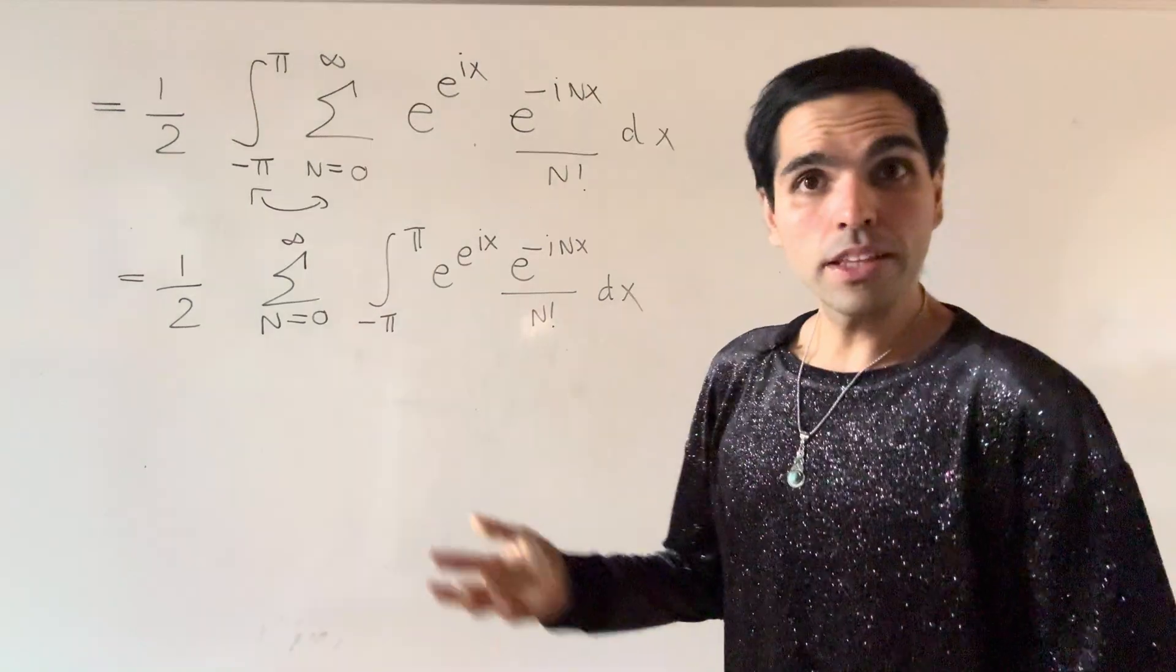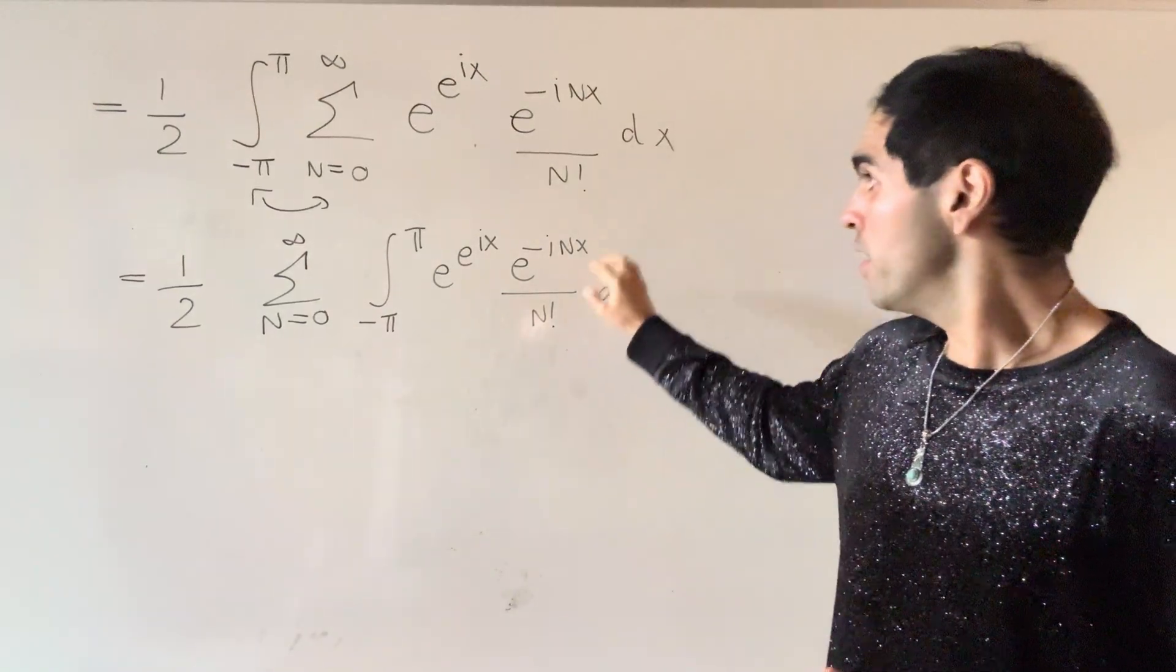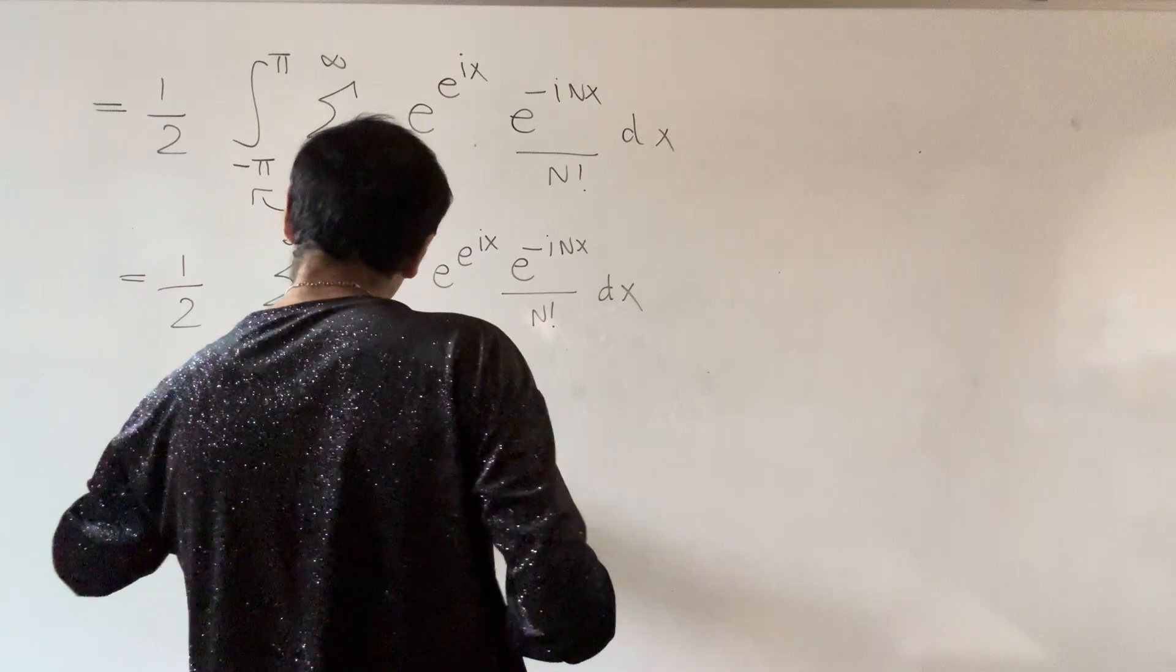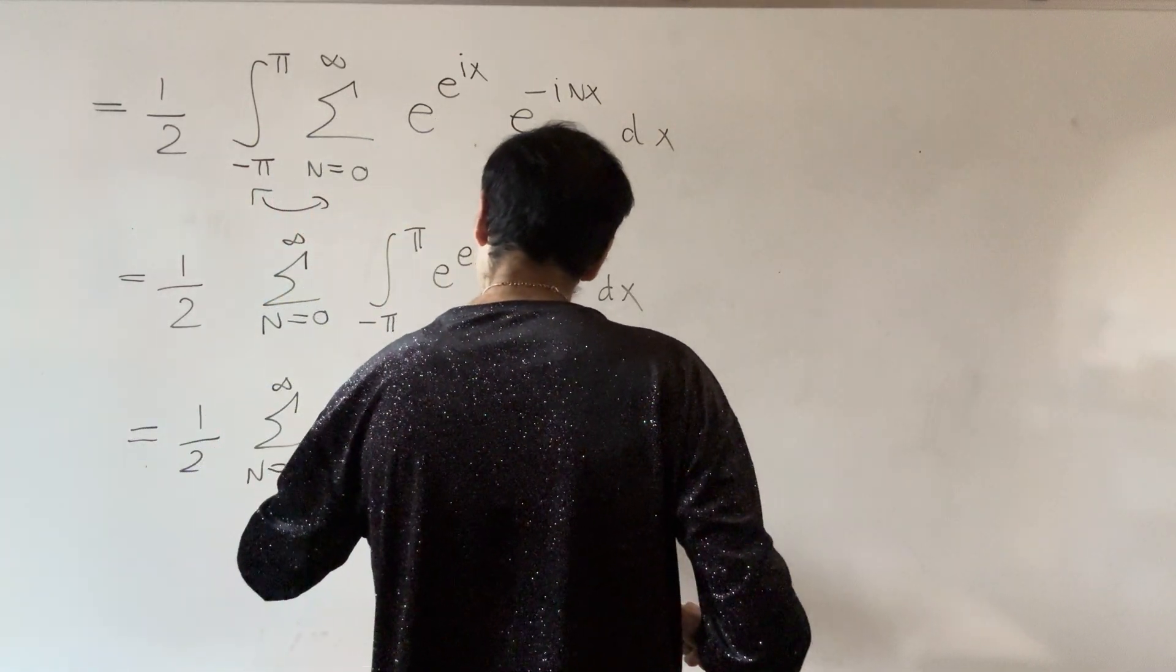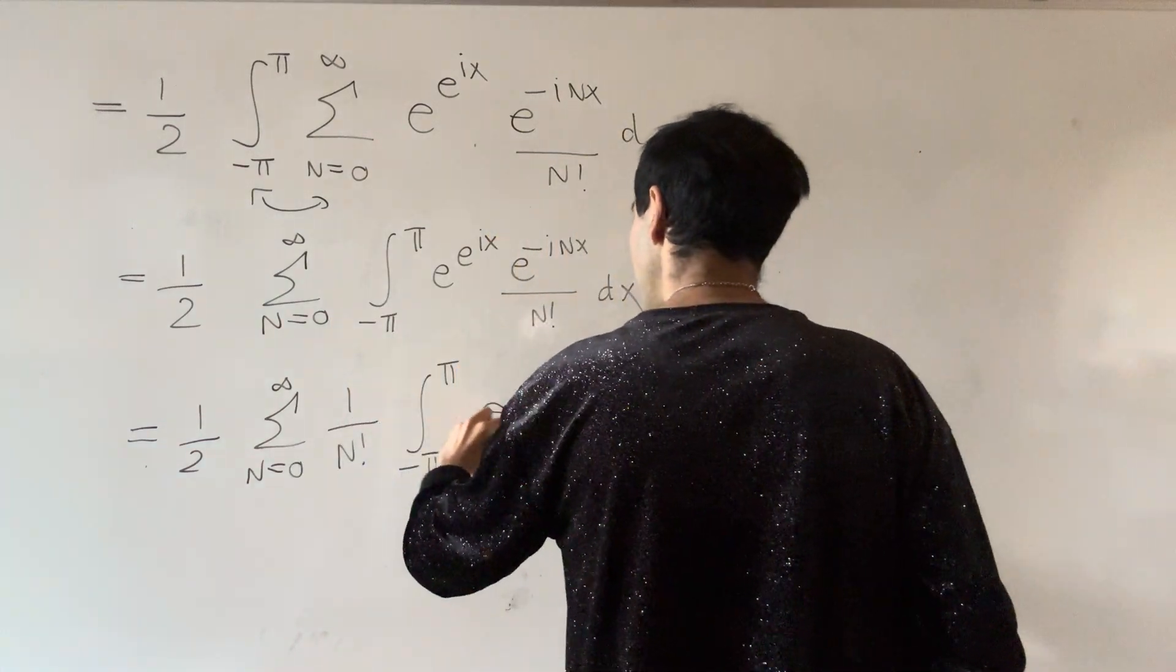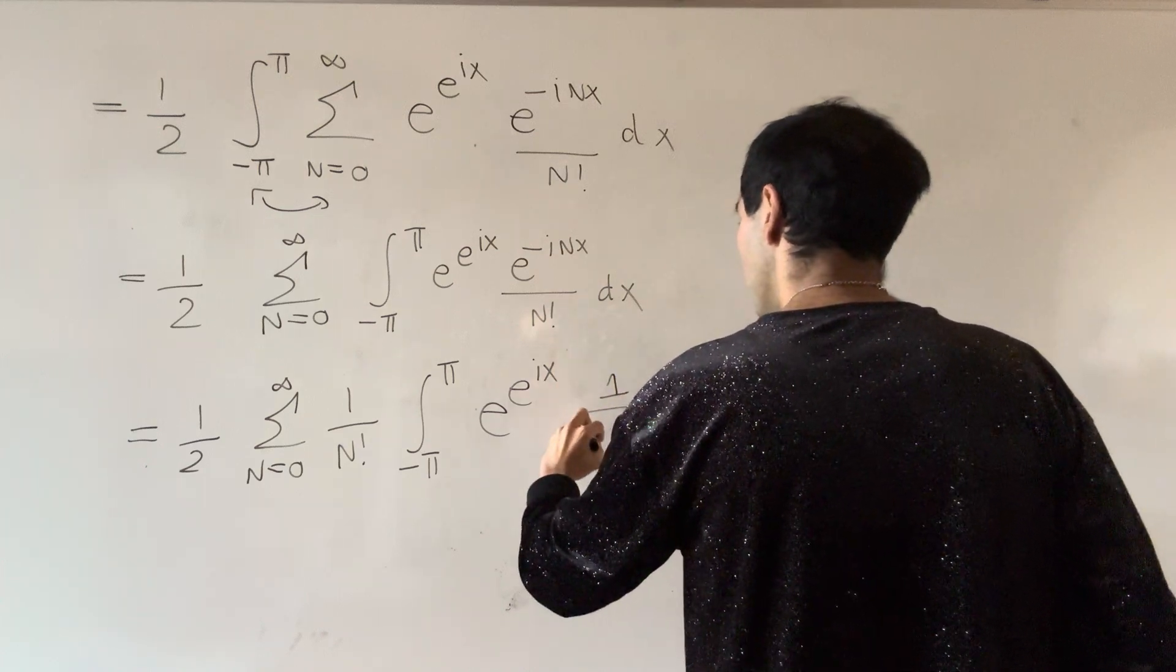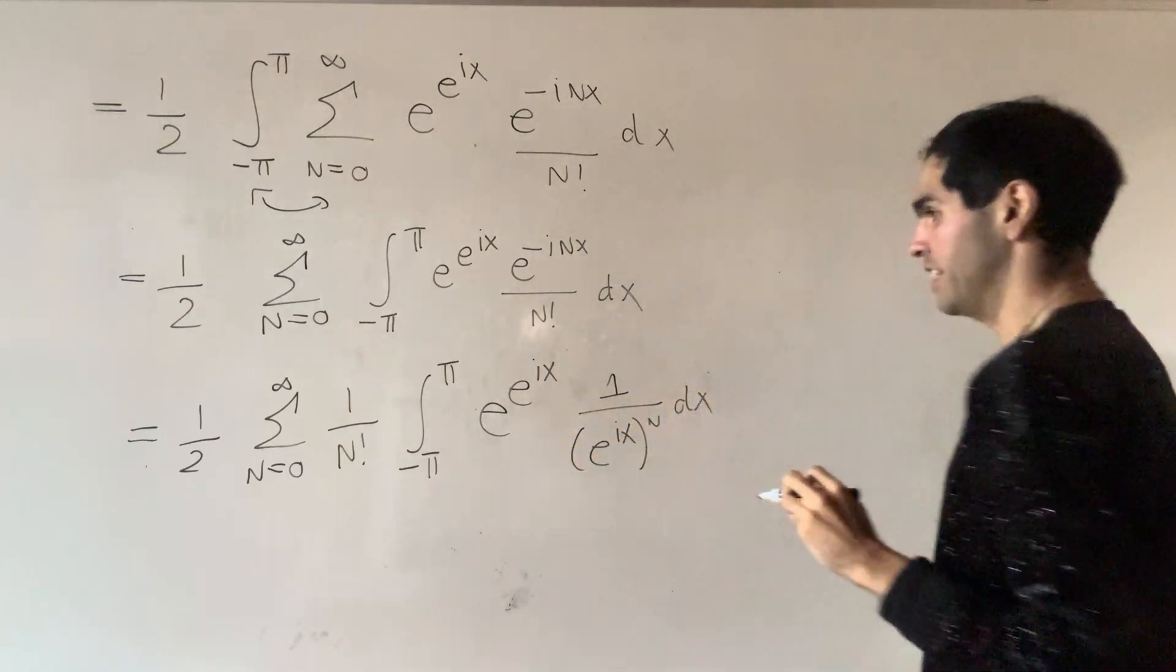And the cool thing is, not only does this n factorial come out, but we can also write this integral in an easier way. So this is one half sum from 0 to infinity of 1 over n factorial, the integral from minus pi to pi. So e to the e to the i x, and then one over e to the i x to the n dx.